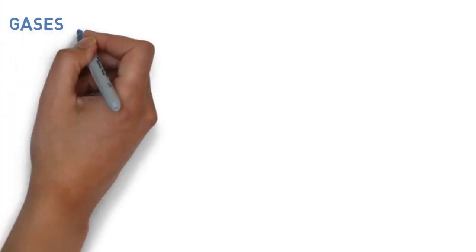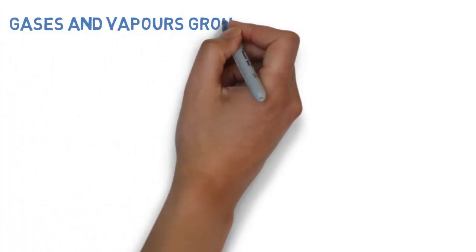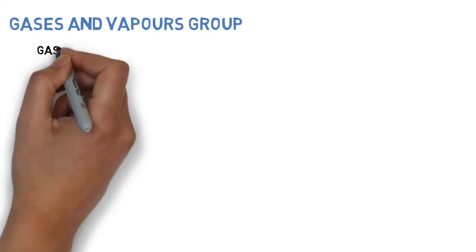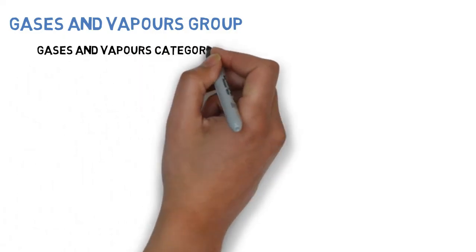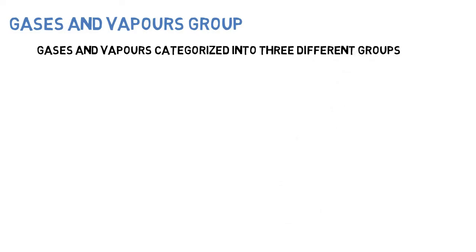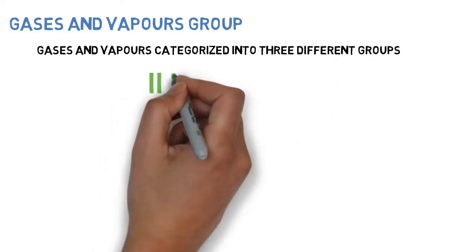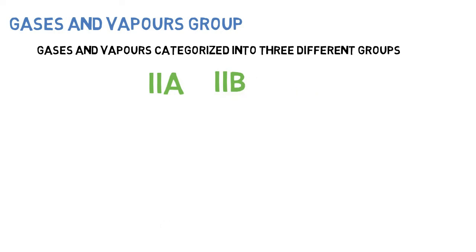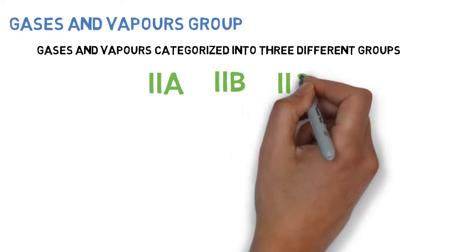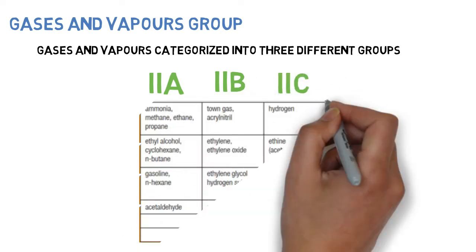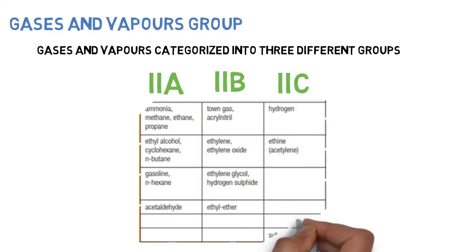Gases and vapors group. Gases and vapors are categorized into three different groups: 2A, 2B, and 2C. Refer to this table for the list of gases as per groups.